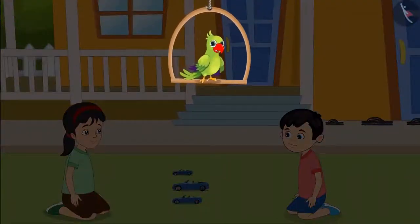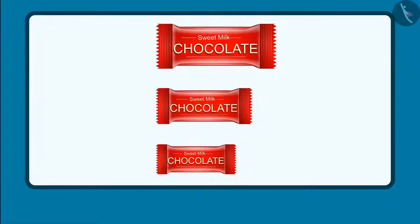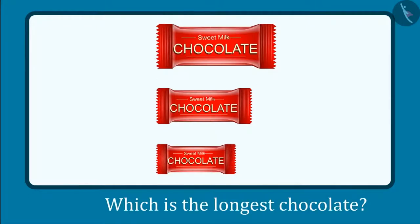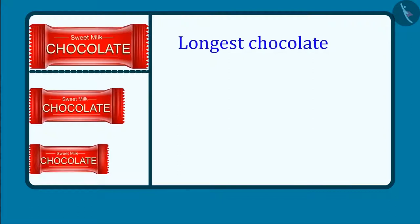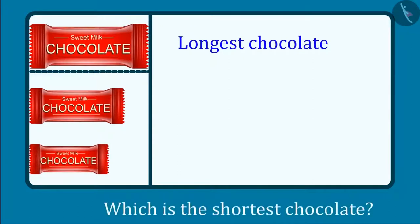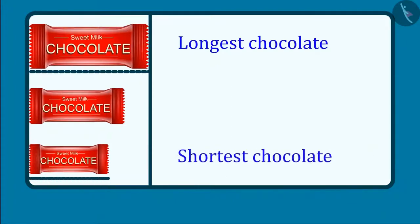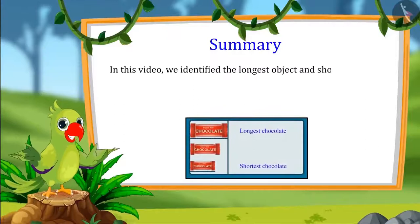So kids, now you can also identify the longest object and the shortest object out of three objects like Chotu. Come, let's see. These are three chocolates. Can you tell me, which is the longest chocolate out of these? Yes, this chocolate is the longest. This means that out of these three chocolates, this is the longest chocolate and this is the shortest chocolate. That is all for today. In this video, we identified the longest object and the shortest objects out of three objects.